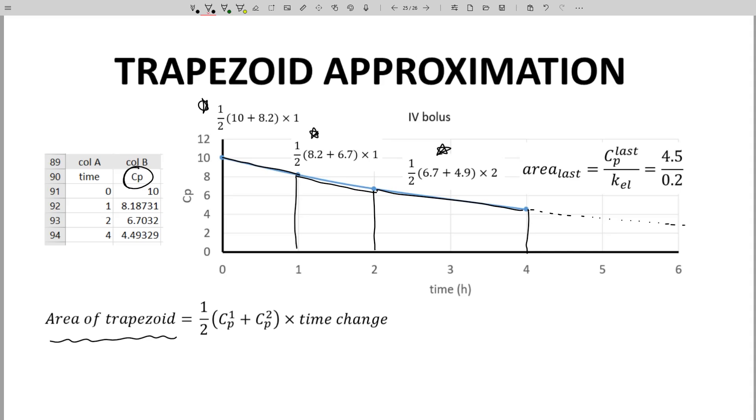The area for this final region, area last, can be determined from the last CP value, creatively called CP last, and KEL, which we determined on the last slide. Okay, add up these areas at the bottom of the screen, and you have the AUC for this IV bolus dose.